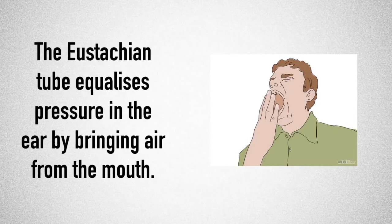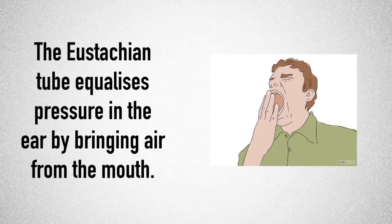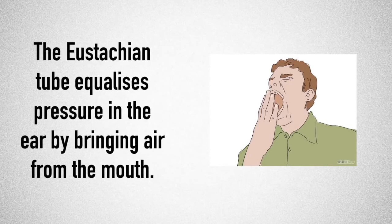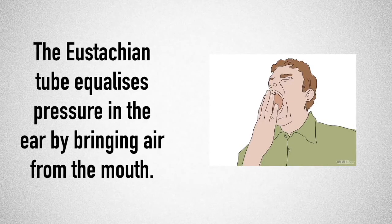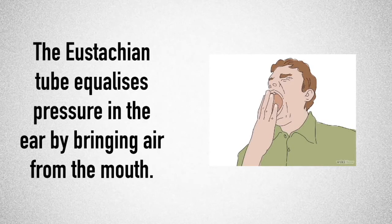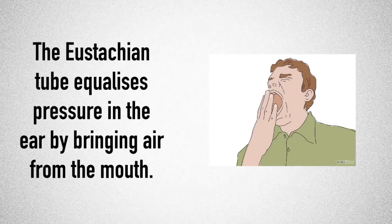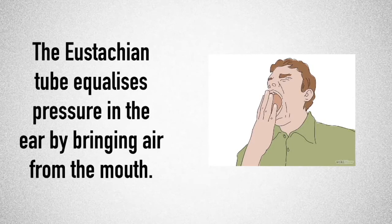The dot point asks us to outline the role of the eustachian tube, and basically the role of the eustachian tube is to equalize air pressure in our ear by bringing in air from the mouth. So when we yawn, it helps us to equalize the pressure so we don't have that build up in our ears.